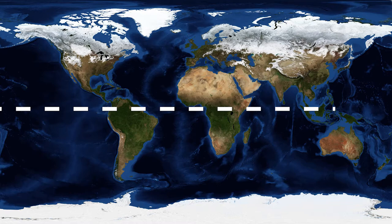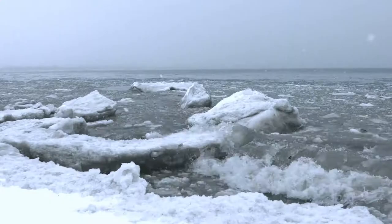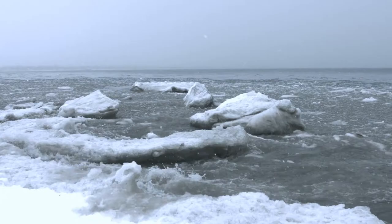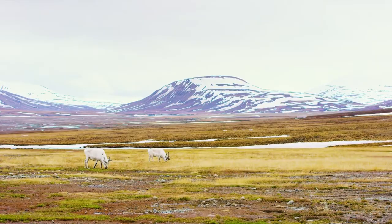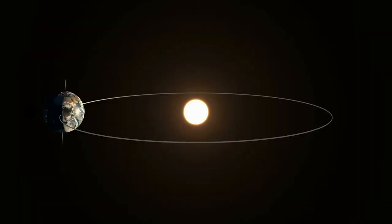At the poles of the earth, sunlight is spread over a wider area. Ecosystems in these areas receive less direct sunlight, and there is less diversity of organisms.